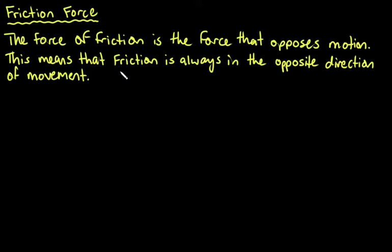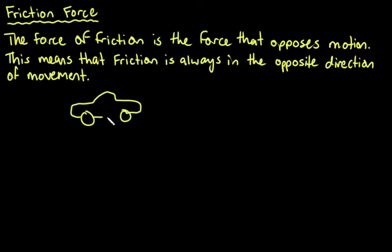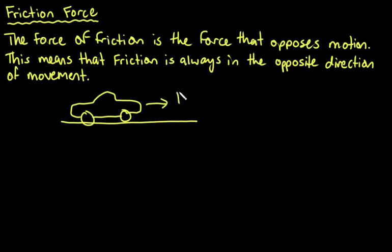In order for friction to occur you need to have two surfaces, or contact between two things. Let's take a look at our car example. We have a car on the road, and there is friction occurring between the tires and the road. If the car is moving towards the right with our applied force, then friction is acting in the opposite direction.